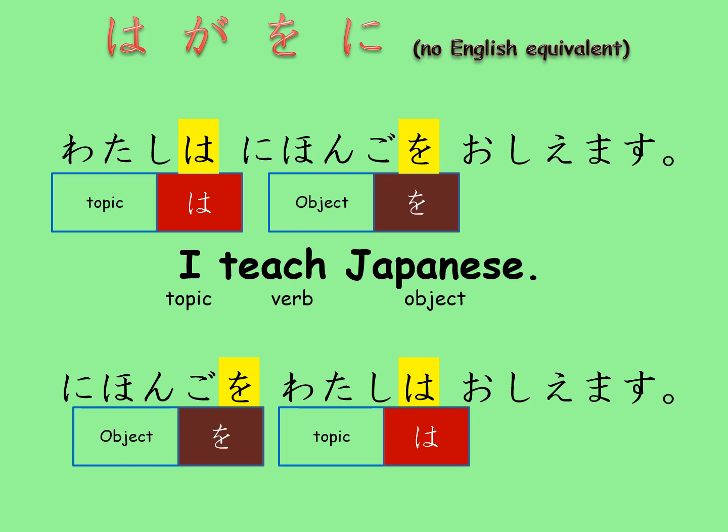Now, I said we can change the order around, but we do need to keep the verb and verb equivalent at the end of the sentence. And while these two Japanese sentences both mean 'I teach Japanese,' the emphasis is different. The first one is more like 'I teach Japanese,' and the second one is more like 'I teach Japanese' — with different stress.